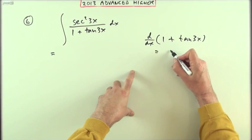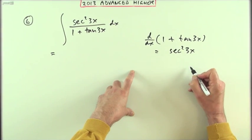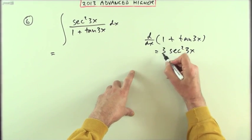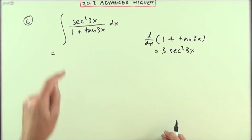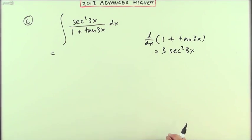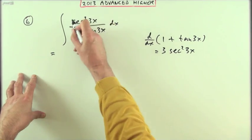That goes to sec squared of whatever it is, multiply by the derivative, that would be 3 sec squared. Well what I've got is just a third of what I need.